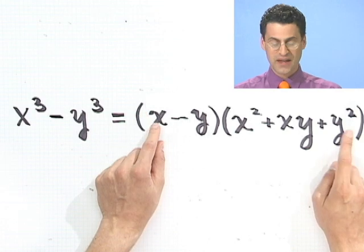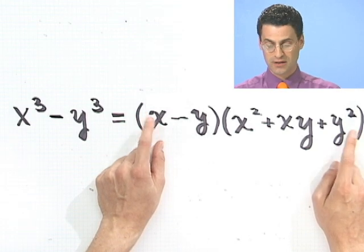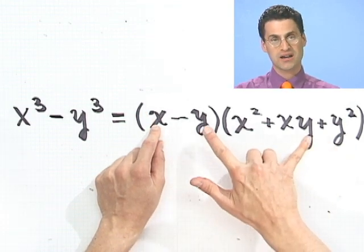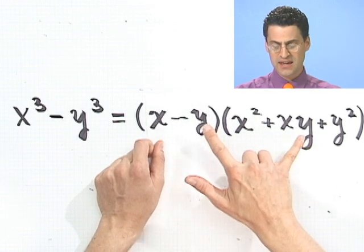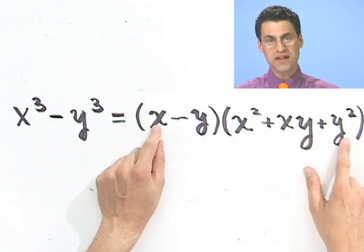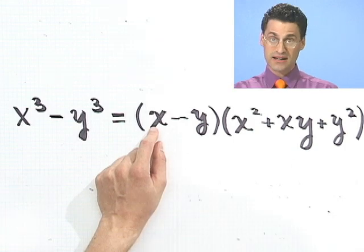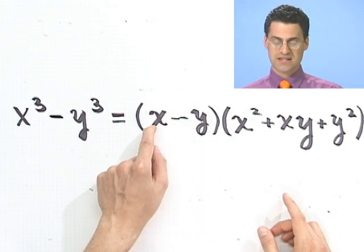What about this term here? That's a plus xy squared. But then later in life, I'm going to have a minus xy squared. So these will cancel with these. There's nothing left. Everyone in fact does die off. So this really is the right factorization.